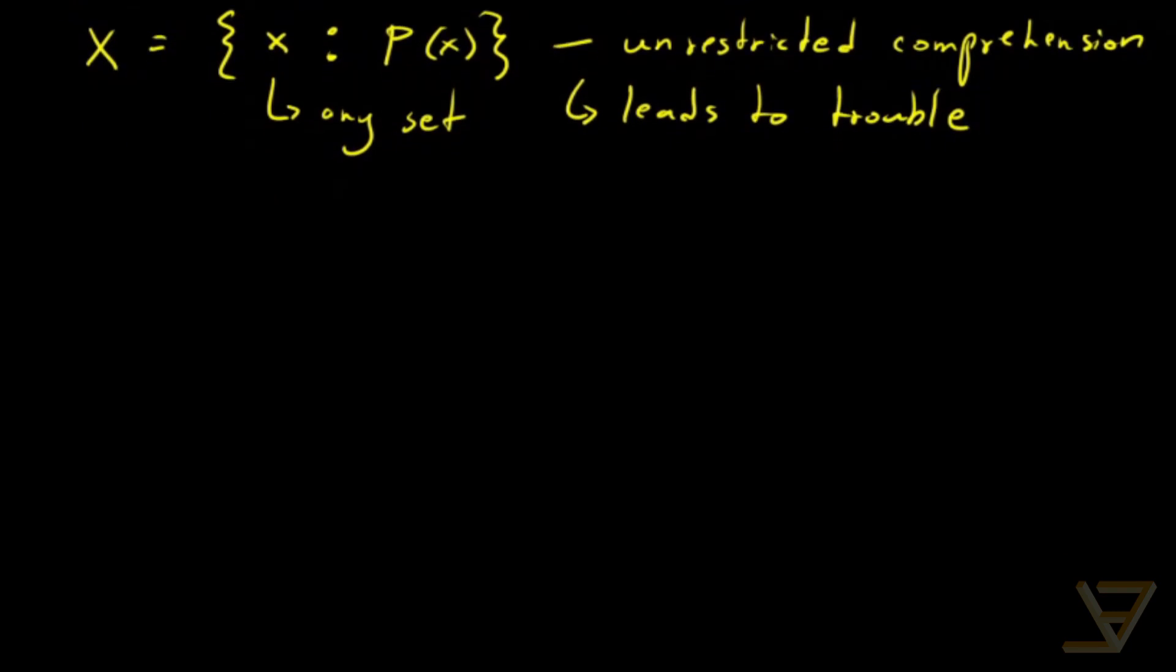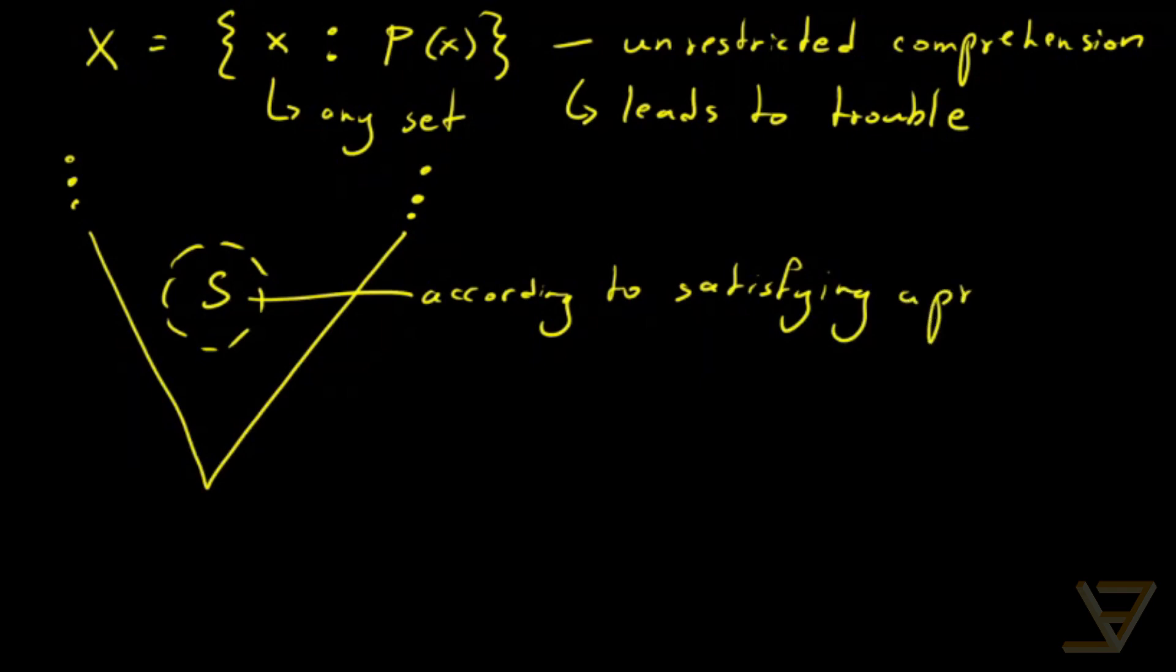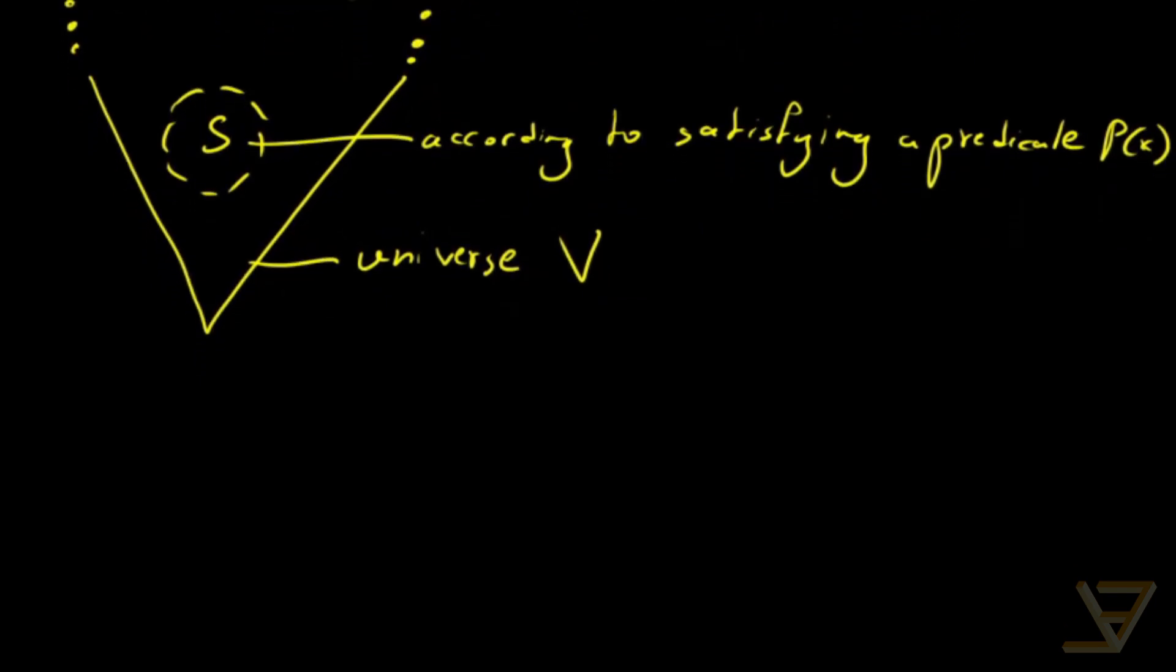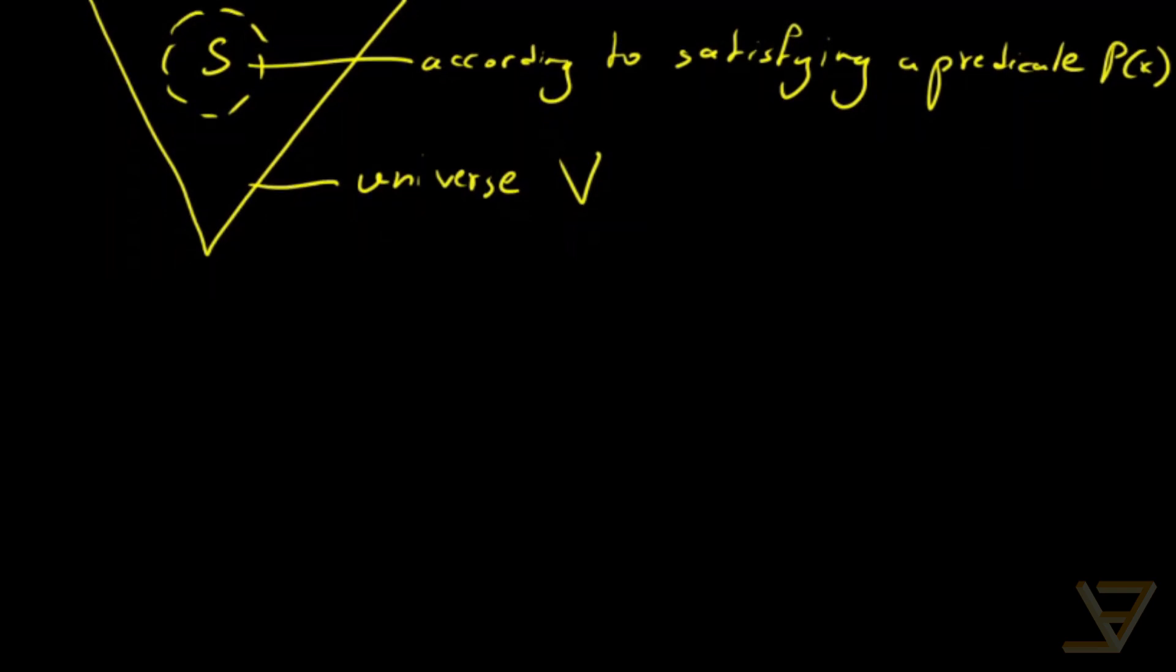What we are trying to show is that it's possible to take the entire mathematical universe, which looks something like this, and we want to carve out a part, let's say S, according to satisfying a predicate P(x). And this over here is the universe V. We are going to show that this is not possible despite the fact that it would be nice. Because it leads to a contradiction which is known as Russell's paradox.